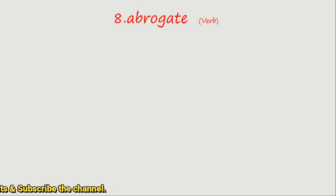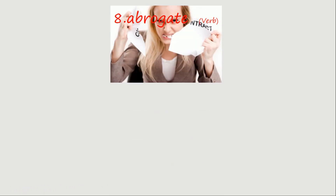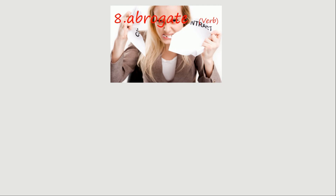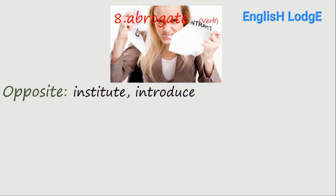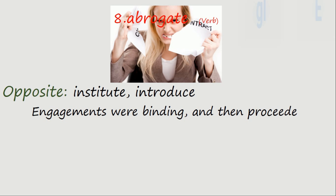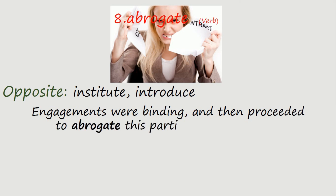Word number eight: abrogate. And this is the verb. Abrogate. The opposite is institute or introduce. Sentence example: 'Engagements were binding and then proceeded to abrogate this particular engagement.'